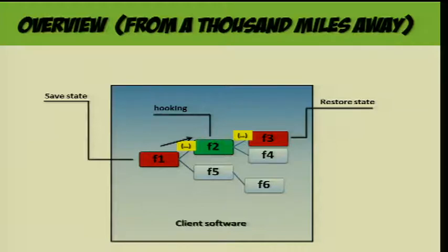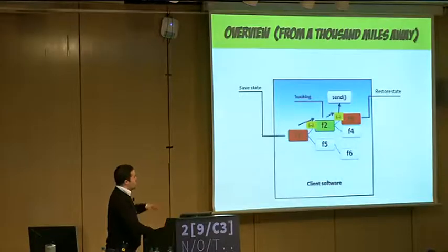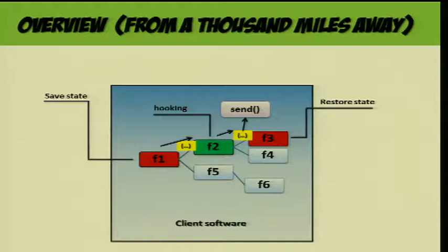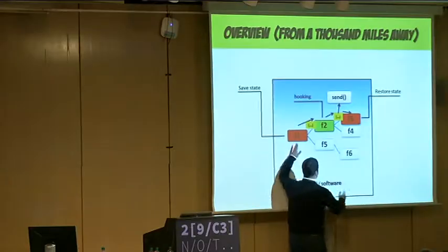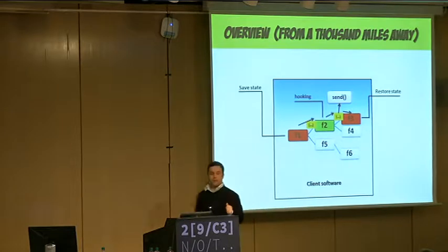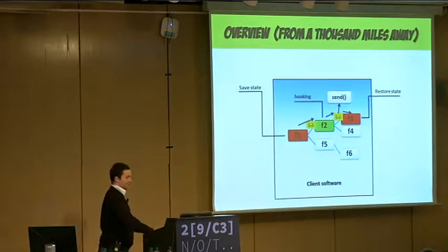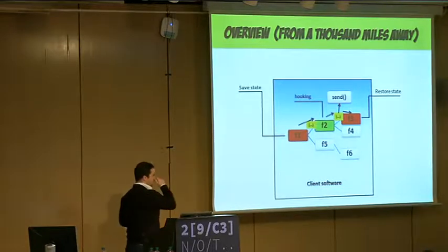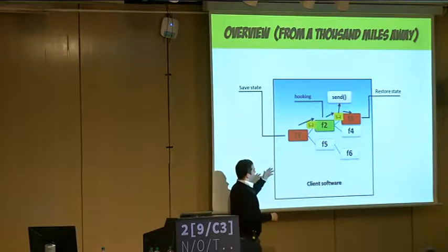Some functions are getting executed — thousands of them. Then eventually F2 is going to get executed. This is the really important one — I'm going to change the values to whatever wrong values. Eventually it's going to send the packet through the network and keep doing other stuff. Then I said: I already have debuggers, so I can do whatever I want with the binaries — they're running under my control.